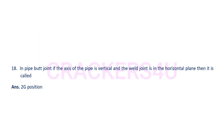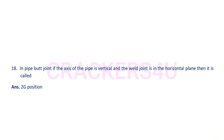Question number eighteen: In a pipe butt joint, if the axis of the pipe is vertical and the weld joint is in the horizontal plane, then it is called the 2G position. In this position, it is fixed position welding and the blow pipe and filler rod are to be moved around the pipe surface.